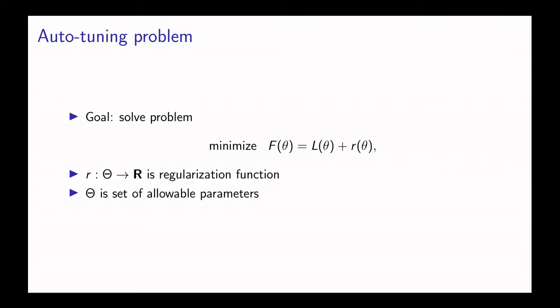r is going to encode either prior knowledge that we have about the parameters, constraints that we have on the parameters, and so on. The set theta is the set of parameters that we're going to allow, and you could incorporate prior knowledge here.